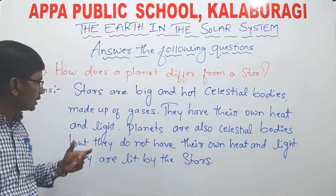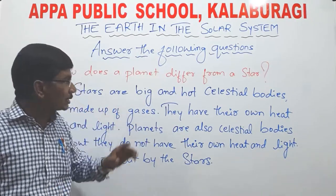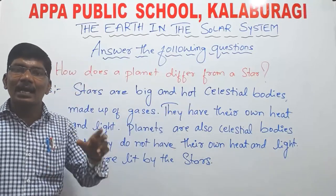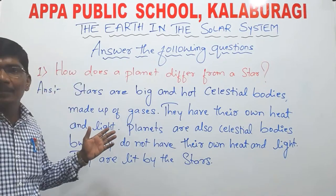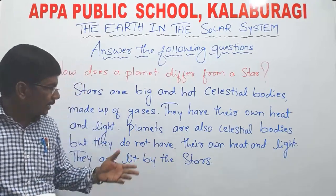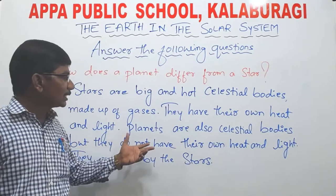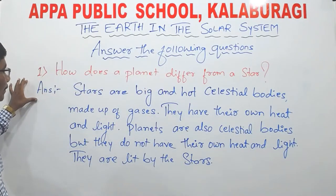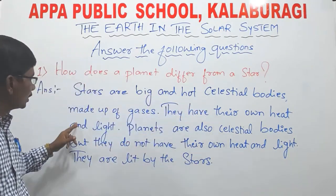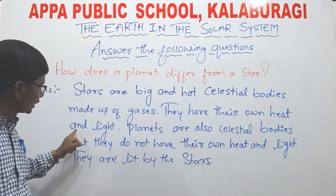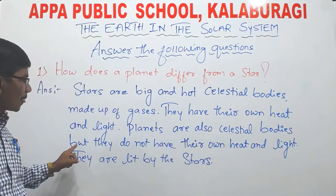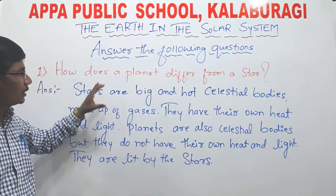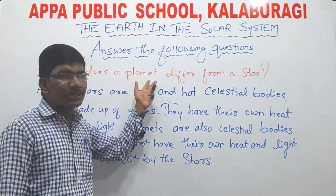Stars are big and hot celestial bodies made up of gases. They have their own heat and light. But planets don't have their own heat and light. Planets are also celestial bodies but they do not have their own heat and light. They are lit by the stars. This is the difference between a planet and a star.